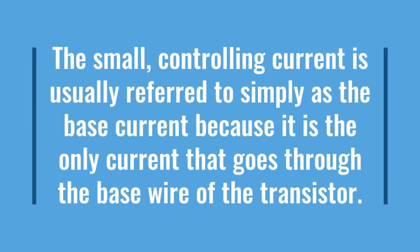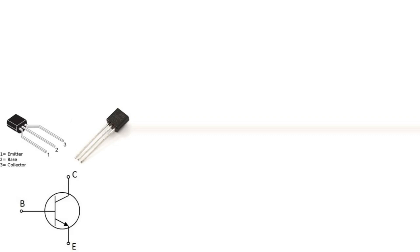Conversely, the large controlled current is referred to as the collector current because it is the only current that goes through the collector wire.